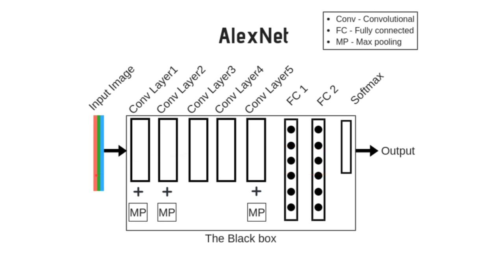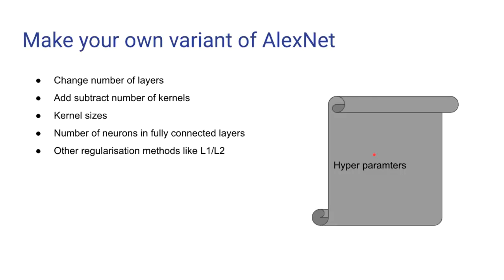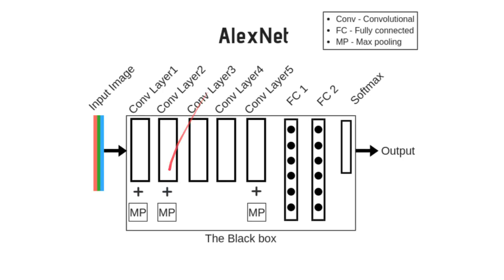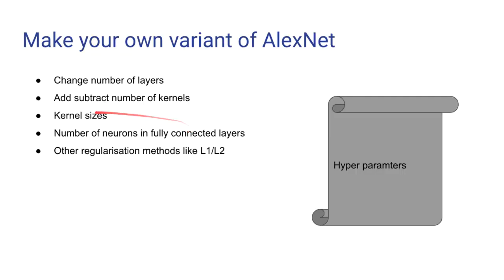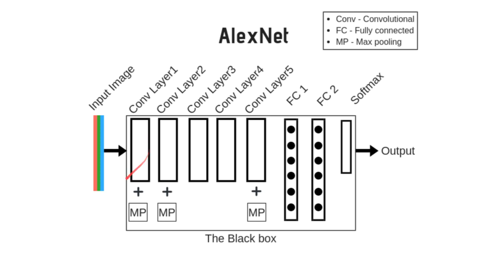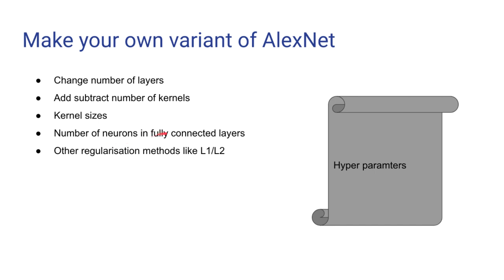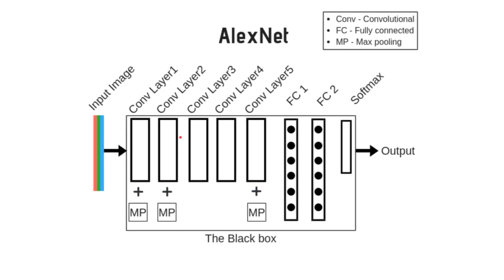This is the crux of AlexNet architecture: five convolutional layers, two fully connected layers, and a softmax layer. We send in our input image and we get the output predictions. Now, how to make your own variant of AlexNet? You can maybe add some more convolutional layers or subtract, add more number of filters or kernels, and you can also change the number of neurons in the fully connected layer.